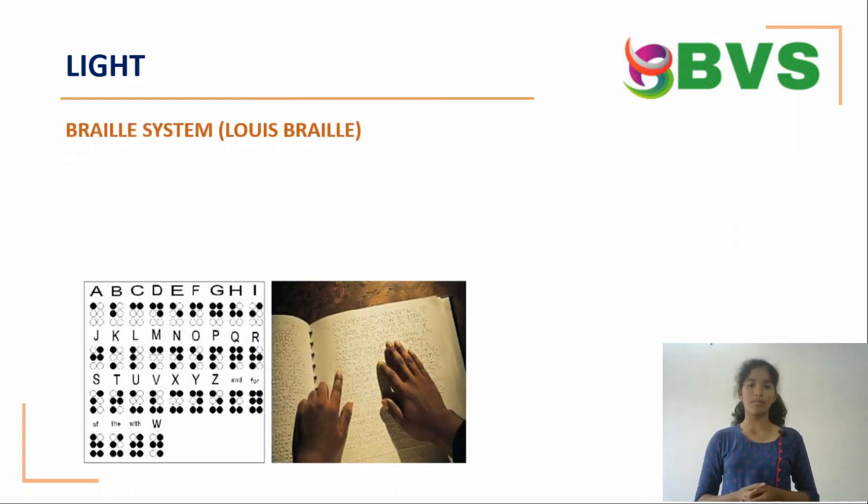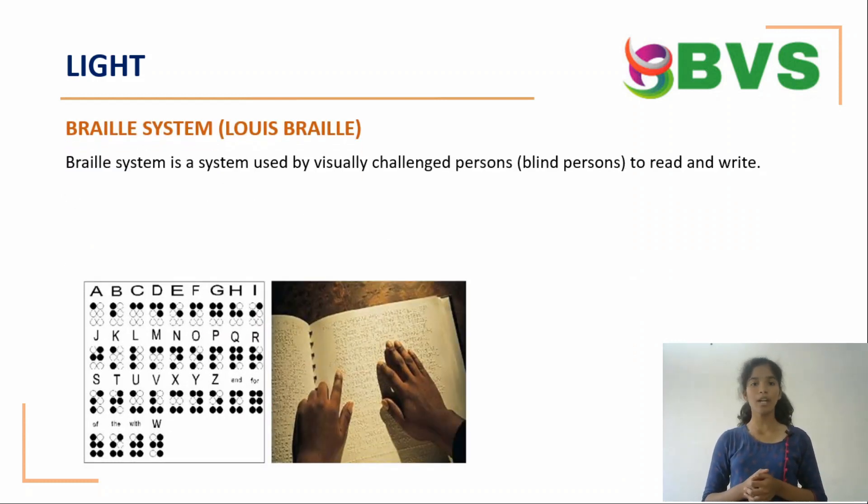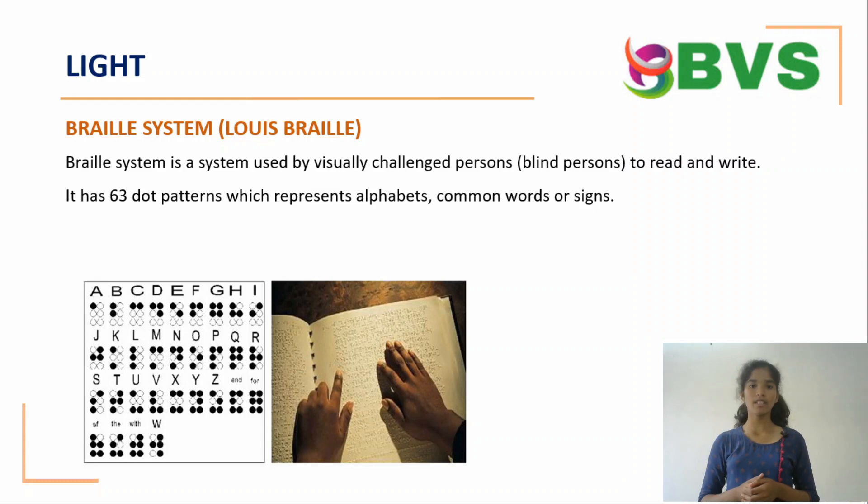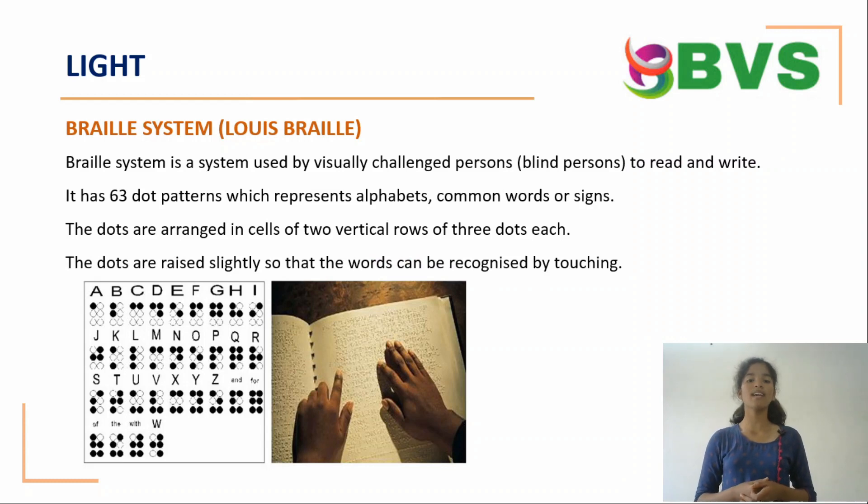Braille system. Braille system is a system used by visually challenged people to read and write. It has 63 dot patterns which represent alphabets, common words, or signs. The dots are arranged in cells of two vertical rows of three dots each. The dots are raised slightly so that the words can be recognized by touching.